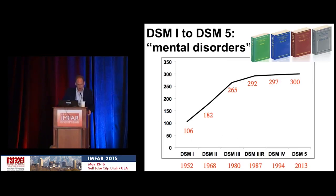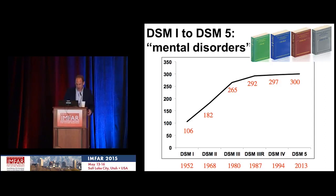DSM-1 through DSM-5 has seen a systematic increase in the number of mental disorders. This is the Diagnostic and Statistical Manual for Mental Disorders — language I find very 19th century. The number has nearly trebled: 106 disorders were listed in DSM-1, and now we're up to 300.